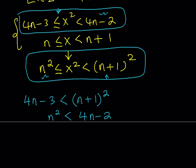Can they be equal? Well, they can't. If you look at the bottom inequality, if they're equal, then n is not an integer — there are no integer solutions for that quadratic equation. What about the top one? 4n minus 3 equals n squared plus 2n plus 1. Bringing terms over: n squared minus 2n plus 4. This doesn't have real solutions — forget about integers. It doesn't have real solutions.